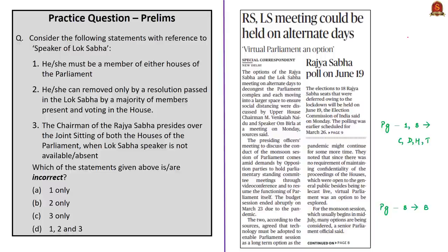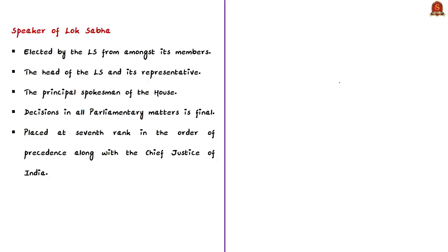The next news article is about presiding officers of both Lok Sabha and Rajya Sabha. Each house of parliament has its own presiding officers: speaker and deputy speaker for Lok Sabha, and chairman and deputy chairman for Rajya Sabha. The speaker of Lok Sabha and chairman of Rajya Sabha are discussing options for conducting meetings on alternate days during the monsoon session to decongest parliament and ensure social distancing norms.